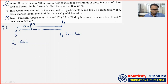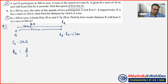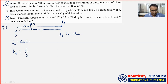سب سے پہلے time نکالوں گا۔ A کا time کتنا ہوگا — time is equal to distance upon speed. یہاں distance میٹرز میں ہے اور speed km per hour میں ہے، اور given information seconds میں ہے۔ تو سب سے پہلے km/hr کو میٹر per second میں convert کروں گا۔